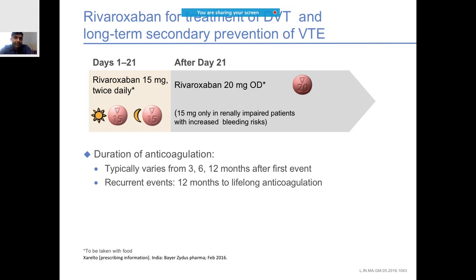For long-term secondary prevention, the same applies: 15 mg BD for up to 3 weeks, then 20 mg OD. Always remember for patients with renal impairment to go a little lower than the advised dose. Duration of anticoagulation typically varies from 3 months, 6 months, up to 12 months after the first event, and if there is recurrence you may consider lifelong anticoagulation.